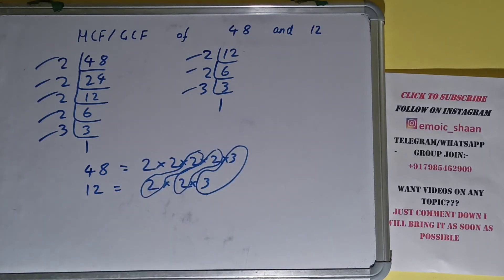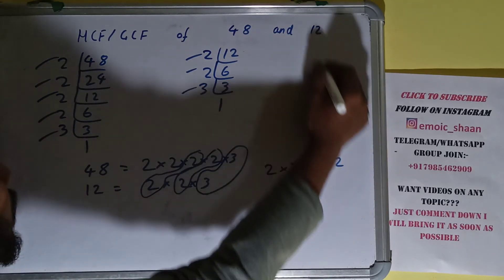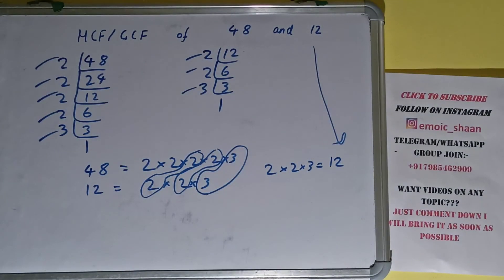So the answer will be 2 times 2 times 3. That is, 2 times 2 is 4, times 3 is 12. So we can see that's here for the GCF of the numbers 48 and 12 is 12.